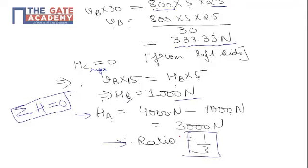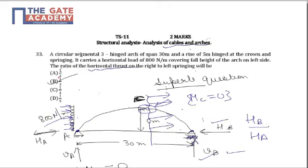So ratio reduces to 1 is to 3 making B as the correct choice for question 33. Thank you.